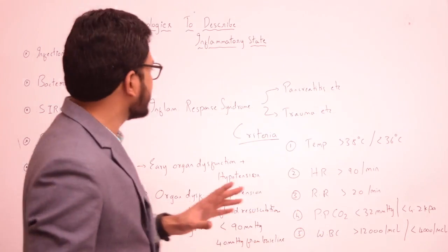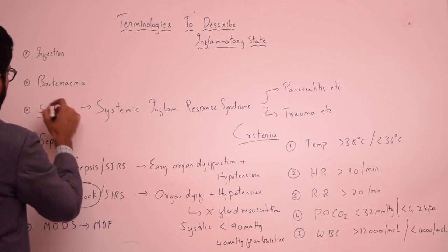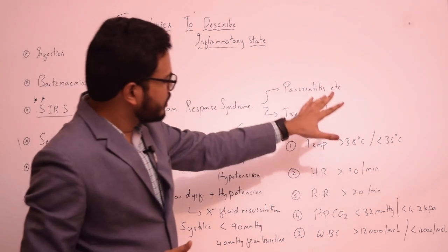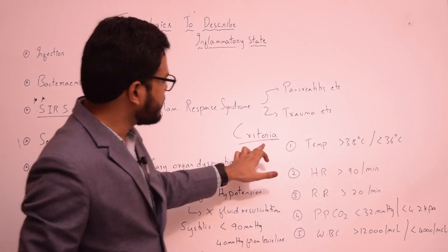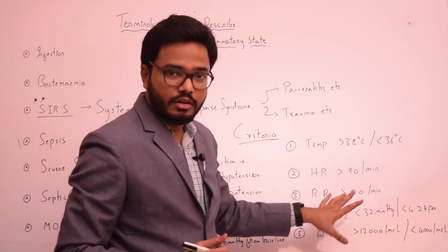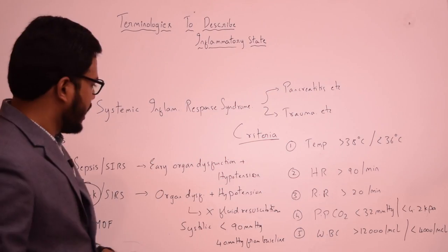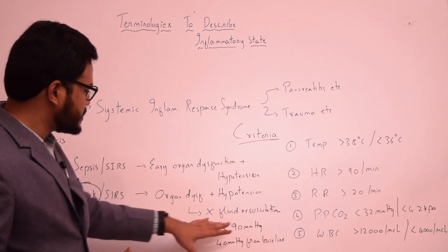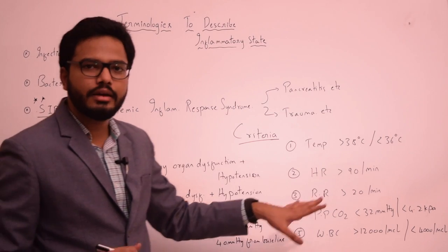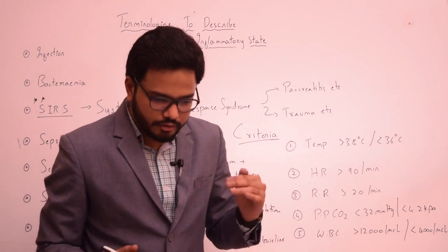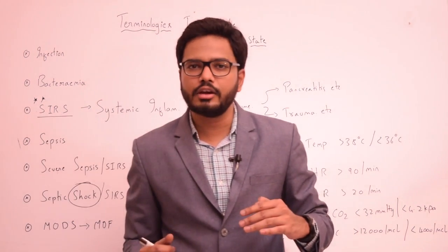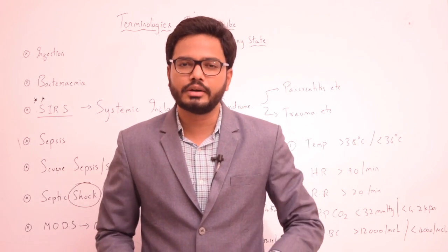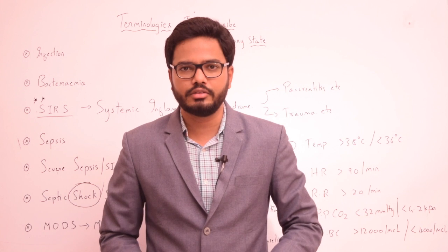Of all these terms, the most important is SIRS and its diagnostic criteria, as many MCQs are based on those values. Also important is the hypotension definition: systolic BP less than 90 mmHg or a fall greater than 40 mmHg from baseline. These are the key points pertaining to various terminologies in inflammatory conditions.